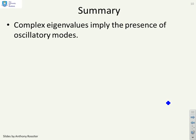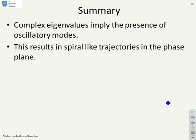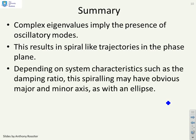So in summary, complex eigenvalues imply the presence of oscillatory modes, and this results in spiral-like trajectories in the phase plane. Depending on the system characteristics such as the damping ratio, this spiralling may have an obvious major and minor axis. If you've got a very low damping ratio, so you oscillate a lot and decay slowly, that will become obvious. But if you decay relatively fast and oscillate a little, it may be less obvious.